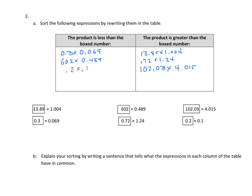Now we explain our sorting by writing a sentence about what the expressions in each column have in common. The ones on the left all have the factor that is not boxed being less than 1; therefore, the product will be less than the boxed number. For the right-hand column, the factor that's not boxed is greater than 1 in each case; therefore, the product is greater than the boxed number.